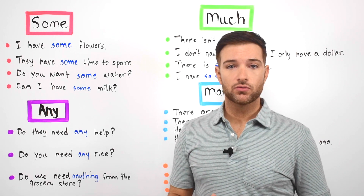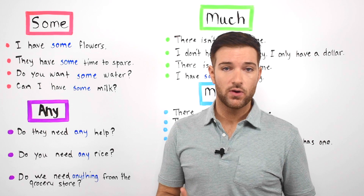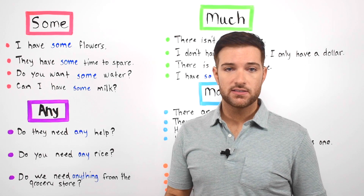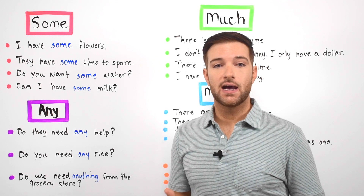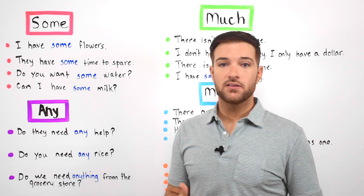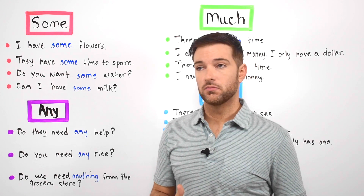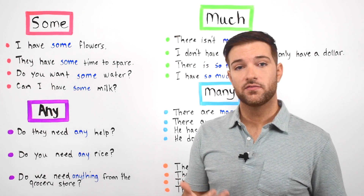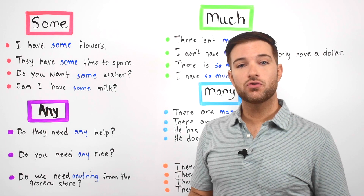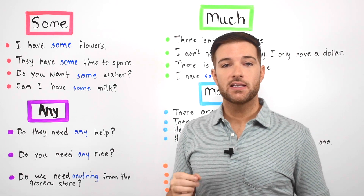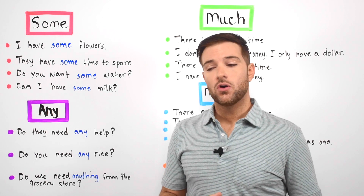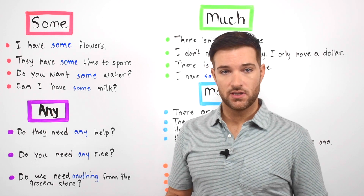There are several rules that can help determine whether one will be used over the other. These adjectives basically mean the same thing but they're used in different kinds of sentences, which makes them tricky to learn. The adjectives 'some' and 'any' are used when the speaker cannot specify, or does not want to specify, a number or an exact amount of something.